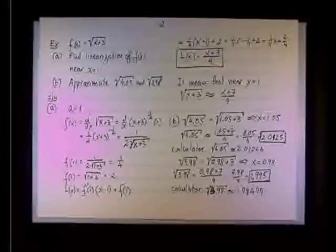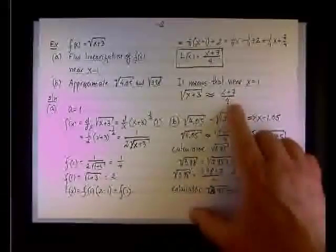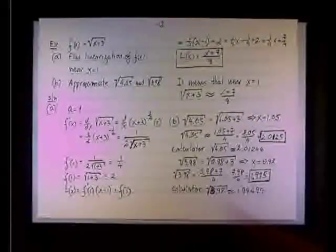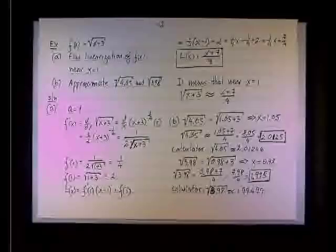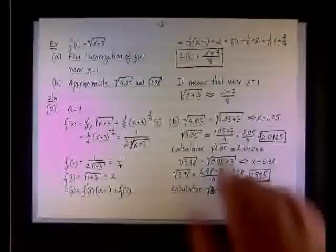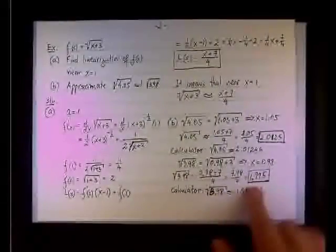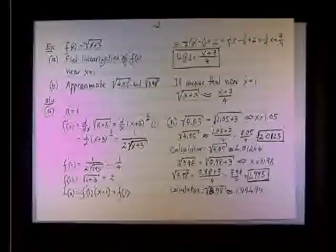So what are we going to do next? In the next example, we're going to find out how we can control the error. In other words, if you want to calculate, the question is, I know that the linearization will give me exact result at x equals 1. My question is, how far from 1 I can go and still get good approximation within certain acceptable errors. For instance, if I allow error of 0.1 on the approximation, then how far from x equals 1 I still can use the linearization. And that will be the next example. Thank you.